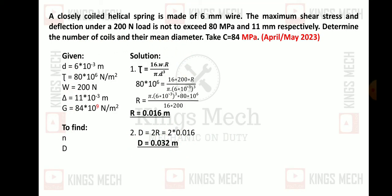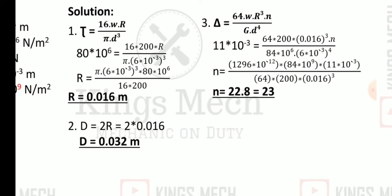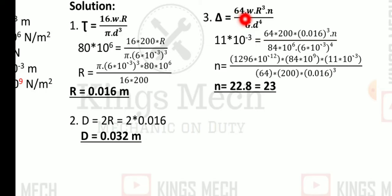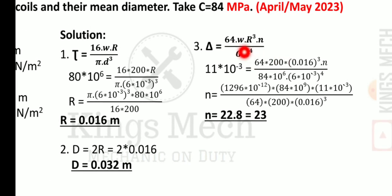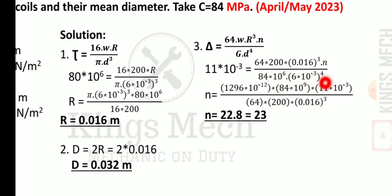To find the number of coils n, we use the deflection formula: δ = 64WR³n / (Gd⁴). Substituting δ = 11×10⁻³, W = 200, R = 0.016, G = 84×10⁹, and d = 6×10⁻³, and solving, we get n approximately equal to 10 coils.